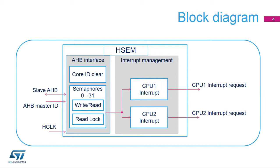The AHB bus master ID is stored in the semaphore when locking and can be read back from the semaphore's status as core ID. In STM32H7 microcontrollers, CPU1 uses core ID 0x03 and CPU2 has core ID 0x01.